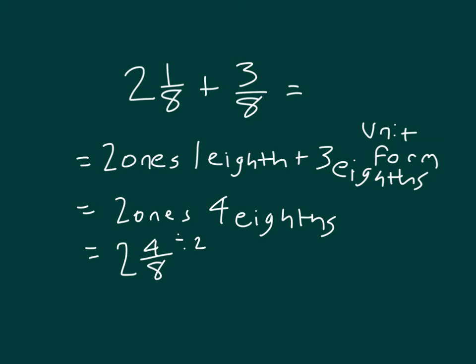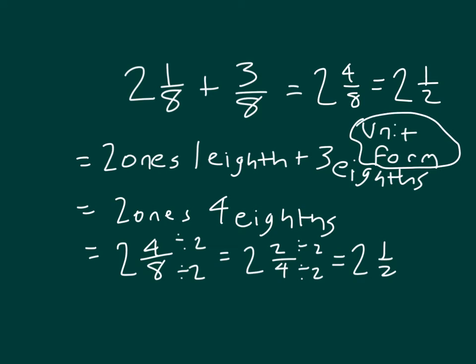We'll notice that that is not in simplest form. So if we divide the numerator and denominator by 2, we would end up with 2 and 2 fourths. We can divide by 2 again to get 2 and 1 half. What we could have done originally is just divide by 4 in the numerator and in the denominator to be able to recognize that 2 and 4 eighths does equal 2 and 1 half. Remember to always express your answer within simplest form.